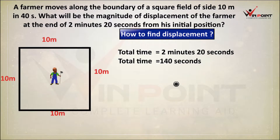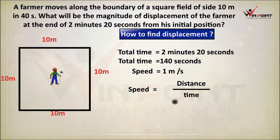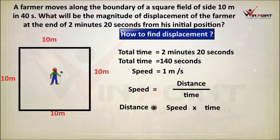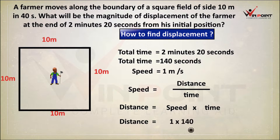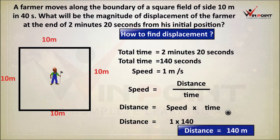The speed of the farmer is 1 meter per second. To find distance: speed equals distance divided by time, so distance equals speed multiplied by time. Distance equals 1 meter per second into 140 seconds, which gives 140 meters. The distance travelled by the farmer is 140 meters.